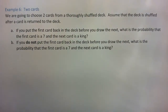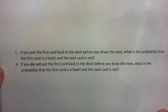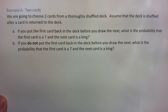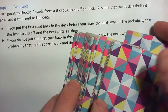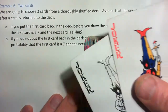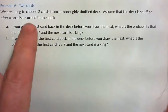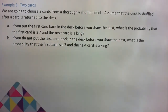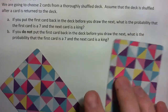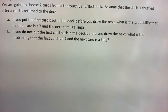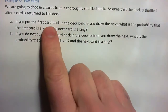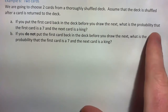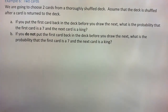In this video we are going to do example 6. We start with a deck of 52 cards, no jokers. We are going to choose two cards from this thoroughly shuffled deck. Assume that the deck is shuffled after a card is returned to the deck. Part A: if you put the first card back in the deck before you draw the next, what is the probability the first card is a 7 and the next card is a king?